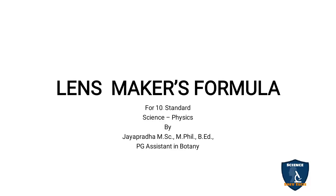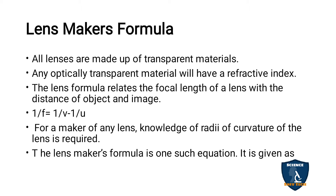Today our topic is the Lensmaker's Formula in Physics Chapter 2, Optics. Before we look at the Lensmaker's Formula, we need to remember the Lens Formula. The Lens Formula is: 1/F = 1/V − 1/U, where F is the focal length, V is the image distance, and U is the object distance.